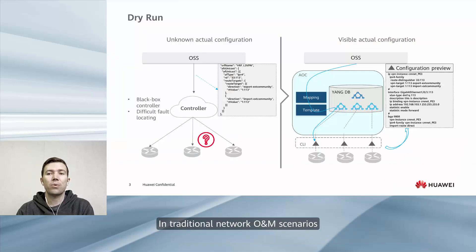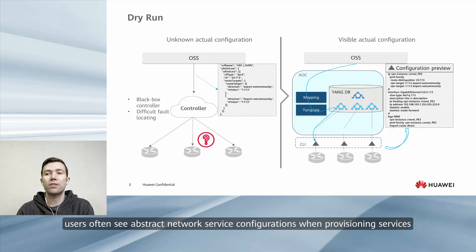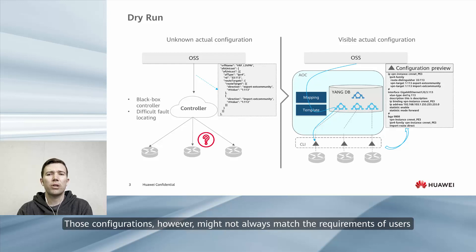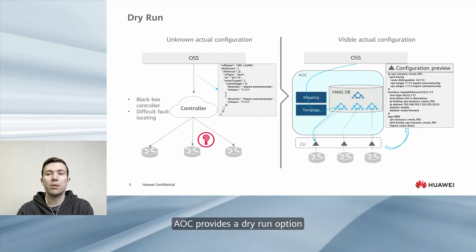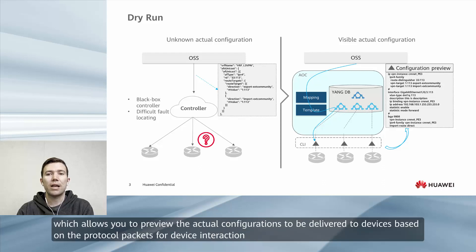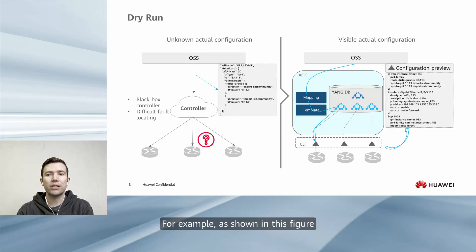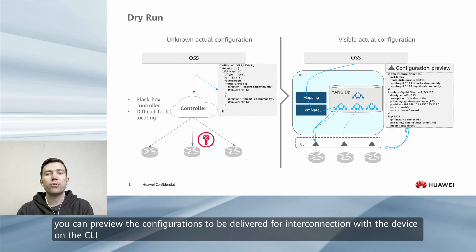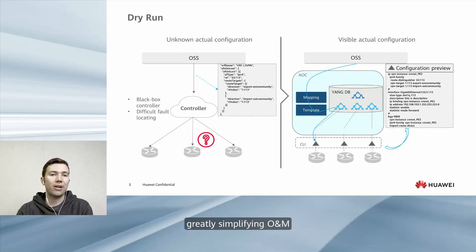In traditional network O&M scenarios, users often see abstract network service configurations when provisioning services. These configurations however might not always match the requirements of users. AOC provides a dry run option which allows you to preview the actual configurations to be delivered to devices based on the protocol packets for device interaction. For example, as shown in this figure, you can preview the configurations to be delivered for interconnect connection with the device on the CLI, greatly simplifying O&M.